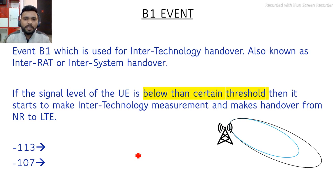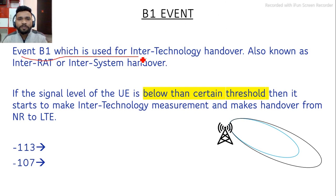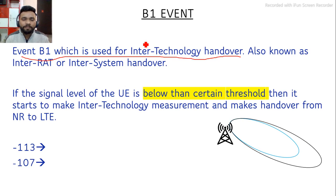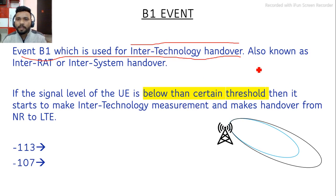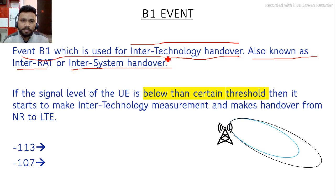To understand how B1 Threshold NRRSRP can help improve the 5G NSA Accessibility KPI, you need to understand the B1 event. Event B1 is used for inter-technology handover — meaning we are connected to 5G and want to move traffic to the 4G network via handover. It is also known as inter-RAT or inter-system handover.